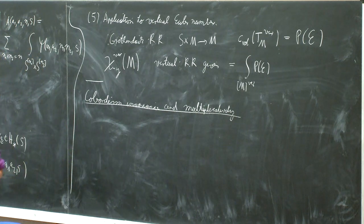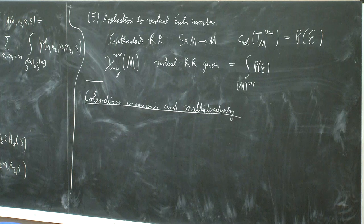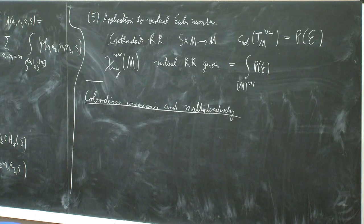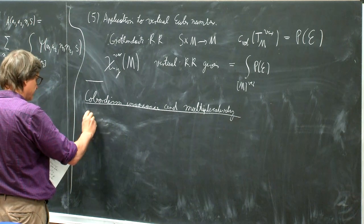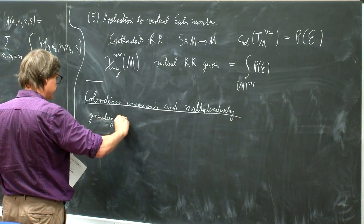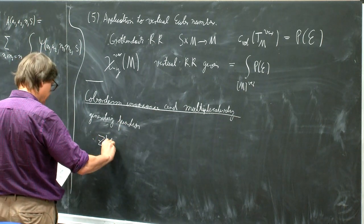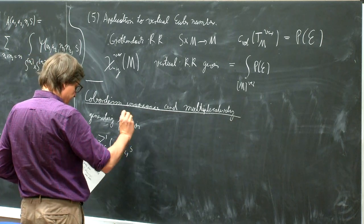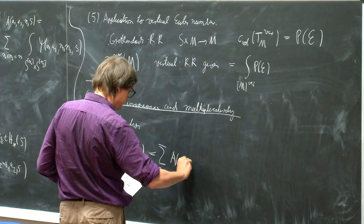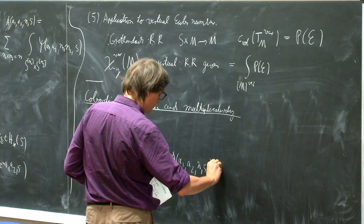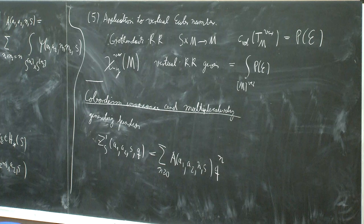To evaluate the expression we have to compute A and then take the coefficient of S to the zero. If you don't know what to do with something, you put it into a generating function and hope something emerges. So we define the generating function Z'(S, A1, A2) as the sum over all n ≥ 0 of the expression Psi(A1, A2, N, S) times Q to the n, where Q is a variable — a kind of partition function.